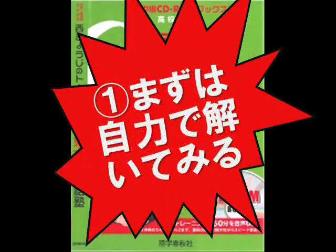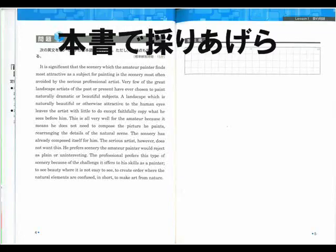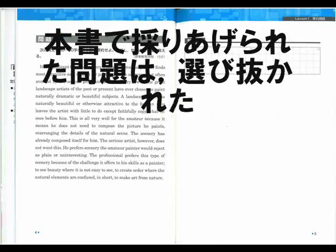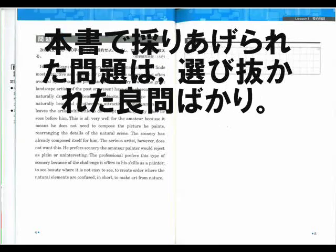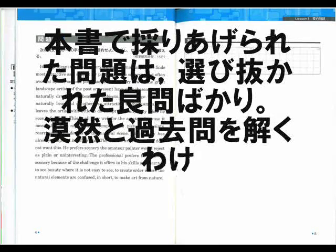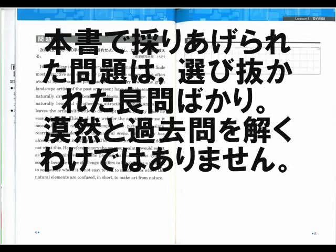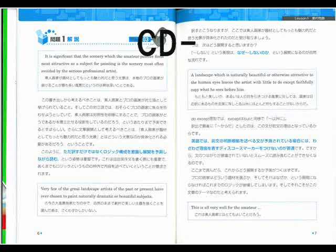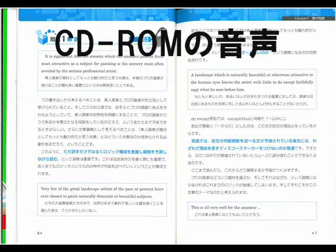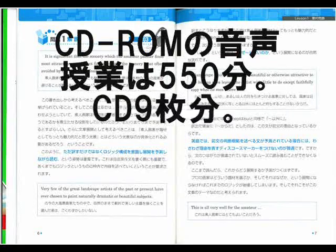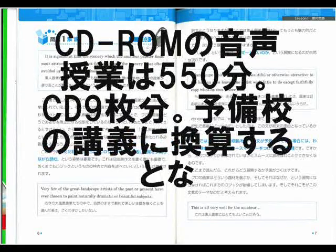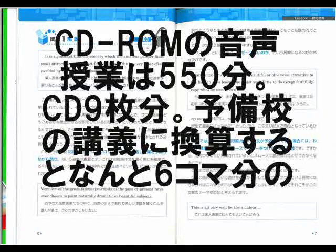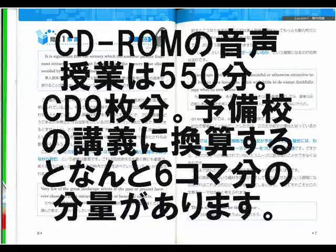今度は、これは素人画家にはとても良いことだ。これは素人画家にとっていい理由、つまり素人の画家がコピーする以外にはしない、そういうような景色を選ぶ理由になっているわけで、60字から80字ということが初めから要求されているとすれば、ここは回答には含まないはずだというぐらいには考えてみたいわけです。